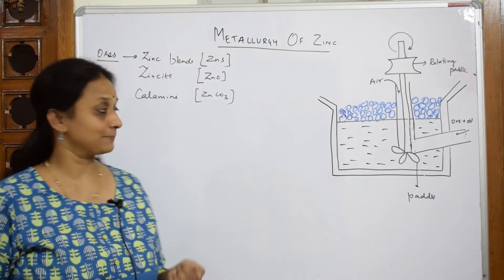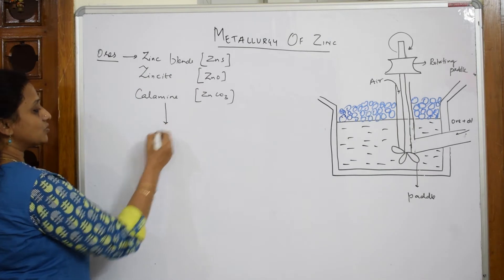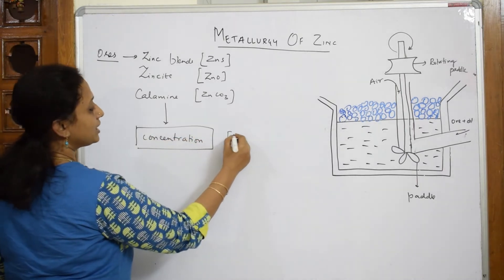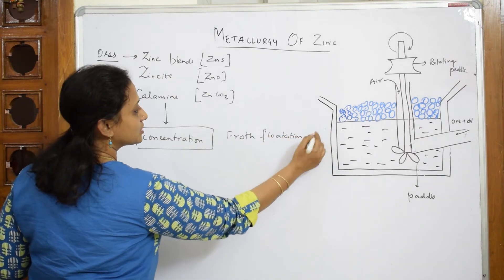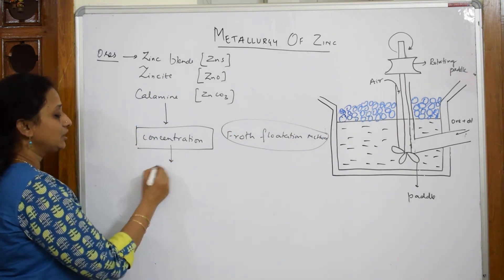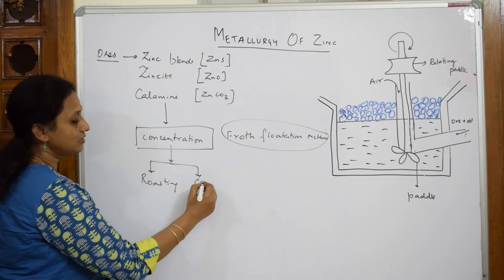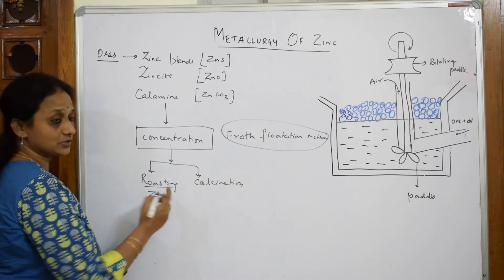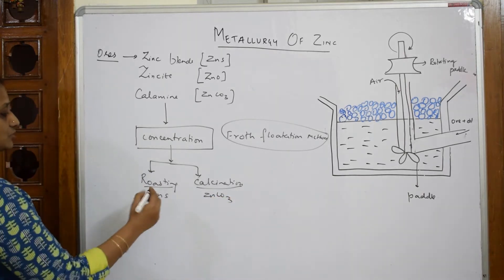Whenever we go into the metallurgy of zinc, the first important step is we are going to take these ores and concentrate them. The concentration method of zinc is done by a process called froth flotation method. From the concentration methods, we are going gradually to take it for two important processes: roasting and calcination. Roasting is done with sulfide ores, and calcination is always done with carbonate ores.